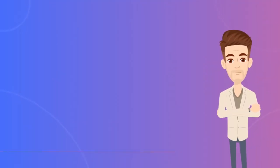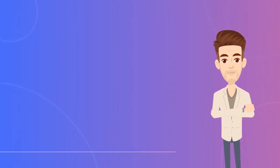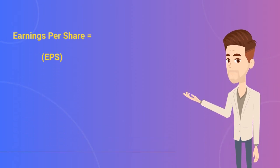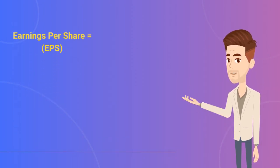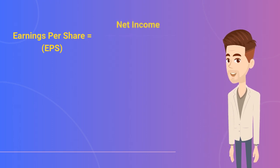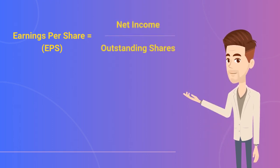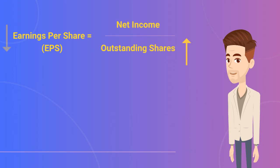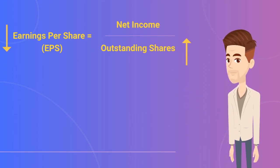Another form of dilution when issuing new stocks is earnings per share. Earnings per share is the annual earnings, which is the net income divided by the outstanding shares. Issuing new stocks would increase the outstanding shares, which means that the earnings is going to be divided among more shares.